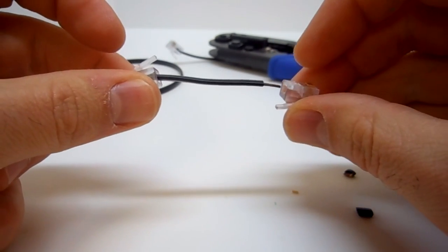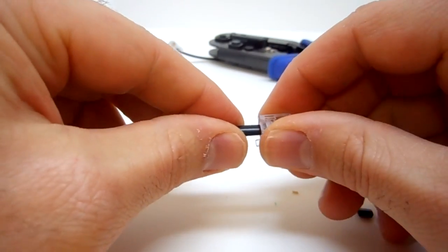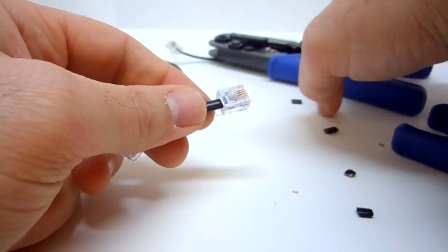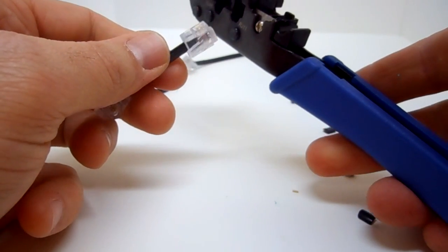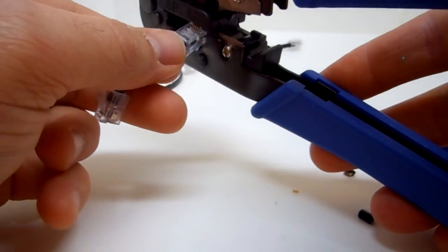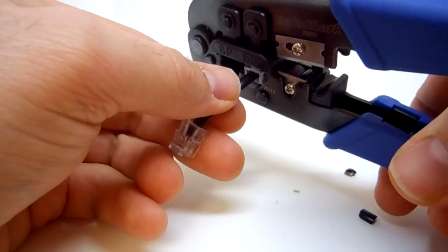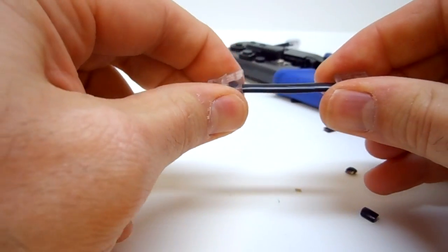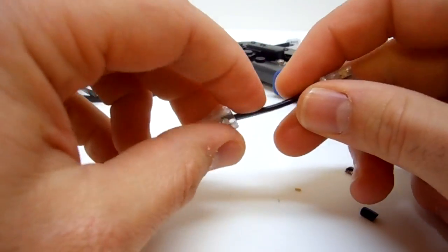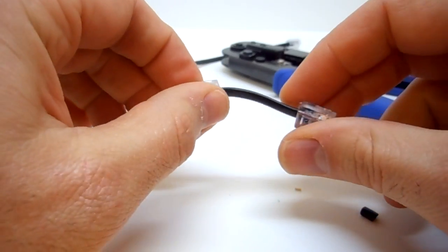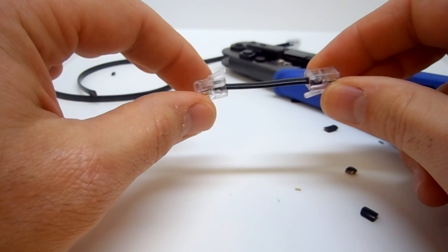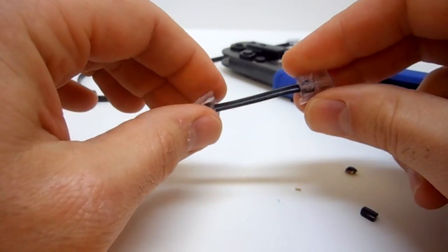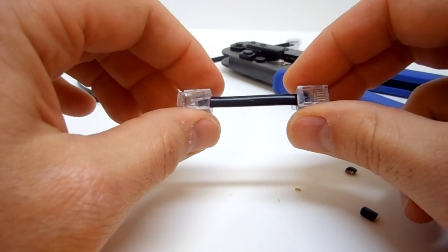We have our tab up on this connector, so we make sure the tab is down on this end. We insert it, make sure the conductors are all the way to the front of the connector, and then we insert our connector into our crimping tool again and squeeze. We remove the connector and give it a little pull test to make sure everything's good. You can also check it for continuity. If you stripped it correctly, made sure everything was 90 degrees, visually inspected each one and gave it a pull test, then you're probably good to go.